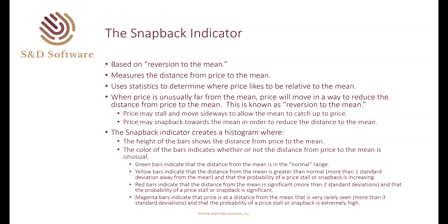If price gets more than three standard deviations away from the mean — a condition that's rarely seen — the probability of price stalling or snapping back is extremely high. This is the basic idea behind the Snapback indicator.